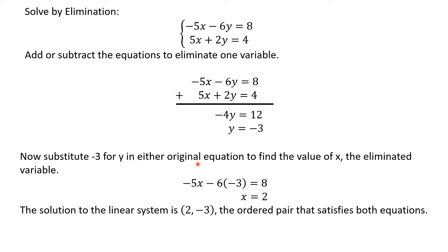Now substitute negative 3 for y in the first equation to find x: negative 5x minus 6 times negative 3 equals 8. Simplifying: negative 5x plus 18 equals 8. Subtract 18 from both sides: negative 5x equals 8 minus 18, which is negative 10. Dividing gives x equals positive 2. The solution for the system is the ordered pair 2, negative 3.